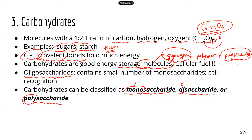We also have oligosaccharides. Oligo means a few but not too many, so oligosaccharides have a small number of monosaccharides in the structure — usually from three to ten monosaccharides, so they're not very big carbohydrates. Oligosaccharides can usually be found on the cell surface, where they're used in the cell recognition process. For example, these oligosaccharides can be used as cell markers, allowing other cells to identify whether a particular cell is a self-cell or a foreign cell.